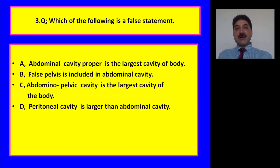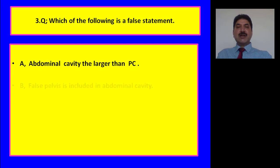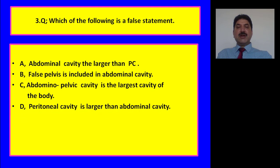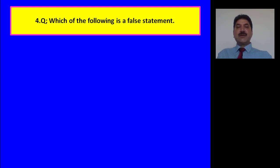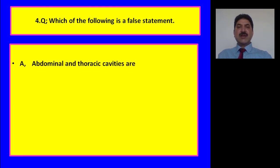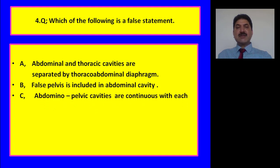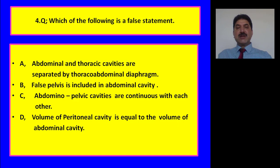Question 3: Which of the following is a false statement? — Abdominal cavity is larger than peritoneal cavity. D is the false statement. Question 4: Which of the following is a false statement? — Abdominal cavity and thoracic cavities are separated by the thoracoabdominal diaphragm; false pelvis is included in abdominal cavity; abdominal and pelvic cavities are continuous with each other; or volume of peritoneal cavity is equal to the volume of abdominal cavity? D is the wrong statement, because abdominal cavity is larger than the peritoneal cavity, as it also includes the extra-peritoneal space.